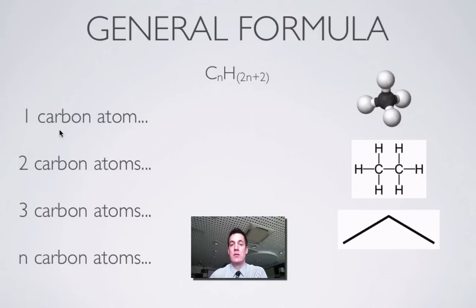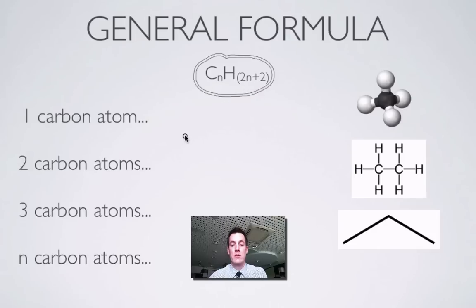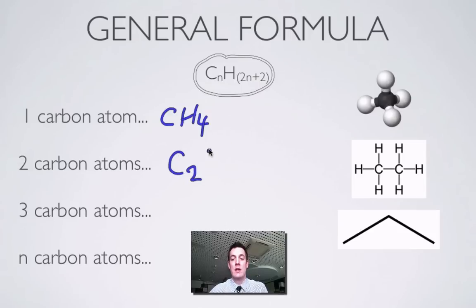All the members of this family of compounds share a general formula. The general formula for alkanes is CₙH₂ₙ₊₂ — what that means is, if you've got a whole number of carbon atoms, the number of hydrogens will be given by 2n + 2. So if you've got one carbon atom, you will have 2×1 + 2 = 4 hydrogen atoms — that's methane: one black carbon atom and four hydrogens. If you have two carbon atoms, 2×2 + 2 = 6, so the next member is C₂H₆.